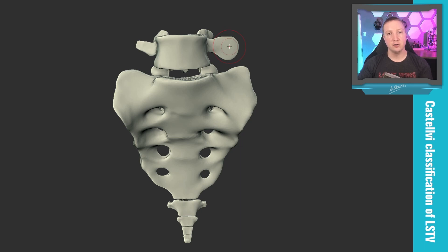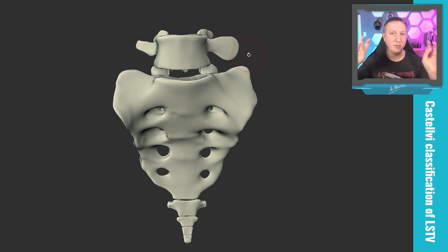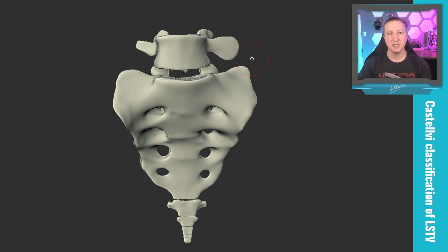A quick way to eyeball it: is it taller than it is long? If it's taller than it is long, then that's the spatulated type morphology, and we can call that a Type 1. No one really reports or dictates this because it has no clinical significance — it only really matters if it changes the mechanics at the lumbosacral junction, which Type 1 doesn't do.